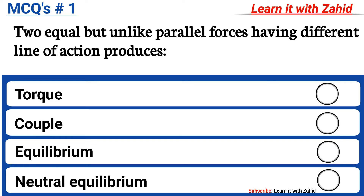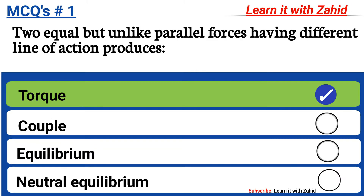Two equal but unlike parallel forces having different line of action produces: option A torque, option B coupled, option C equilibrium, option D neutral equilibrium. The correct answer is option A, torque.